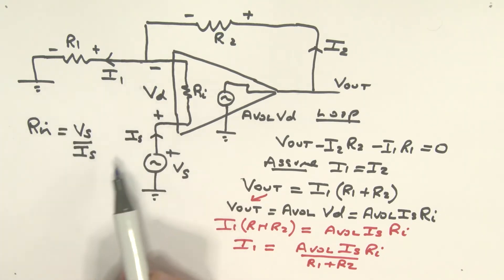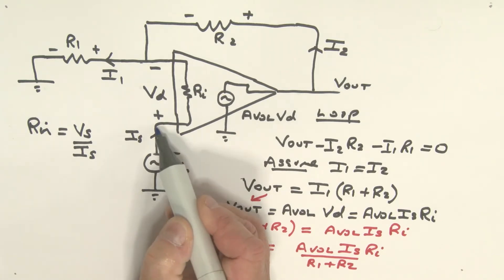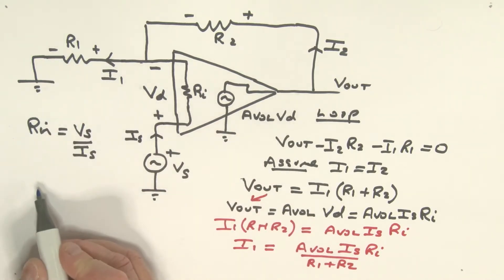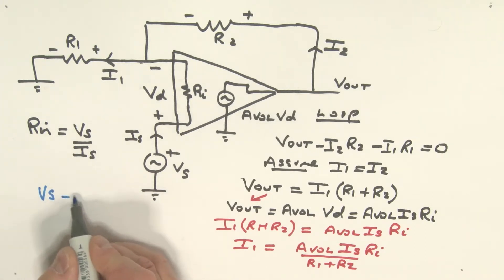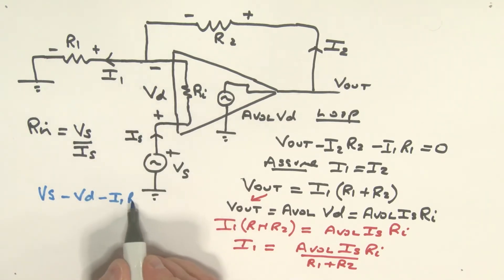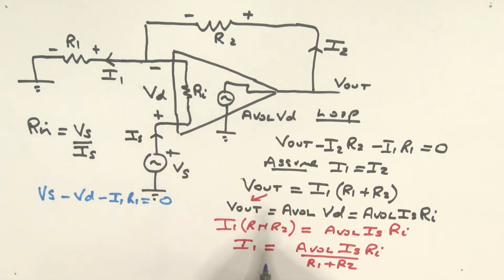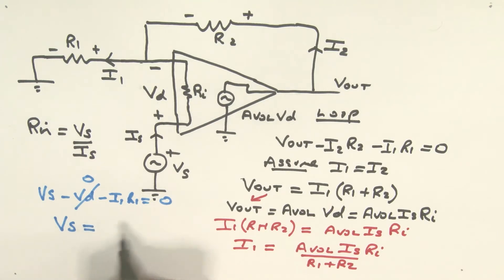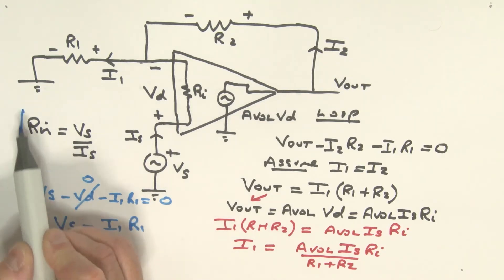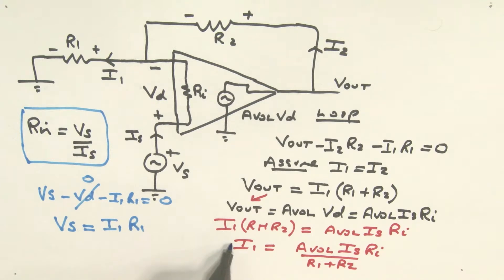Now taking a KVL loop on the input side of the circuit: Vs minus Vd minus I1·R1 equals zero. Since Vd is very small and effectively zero, Vs equals I1 times R1.